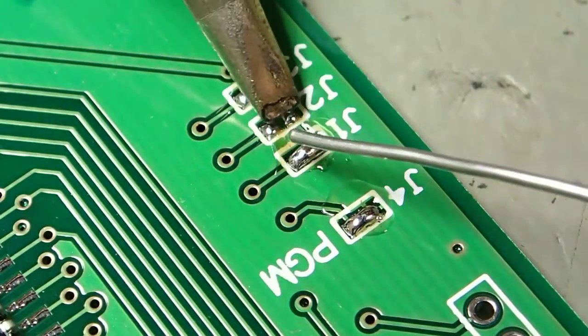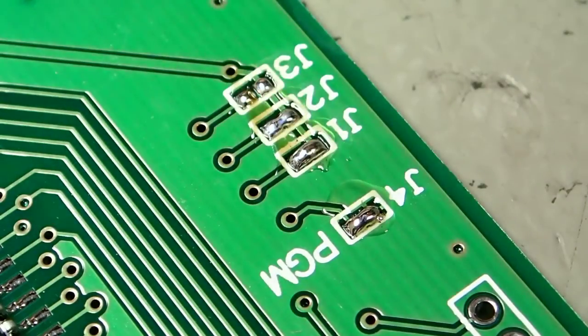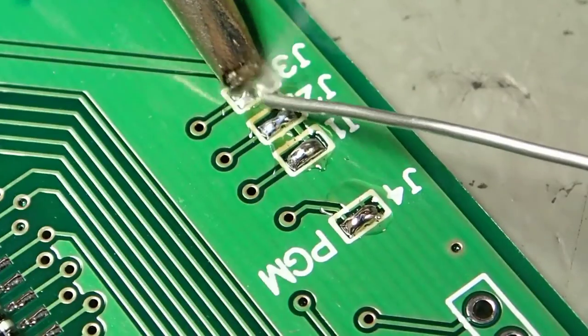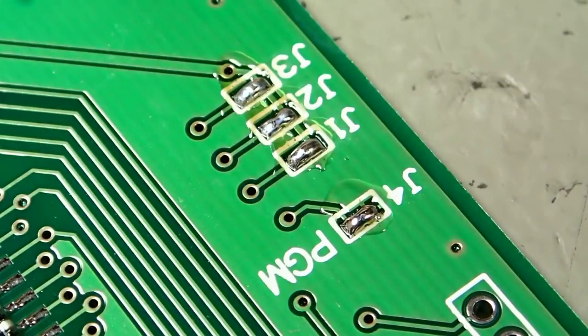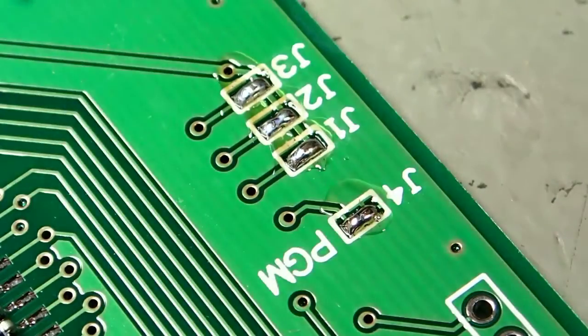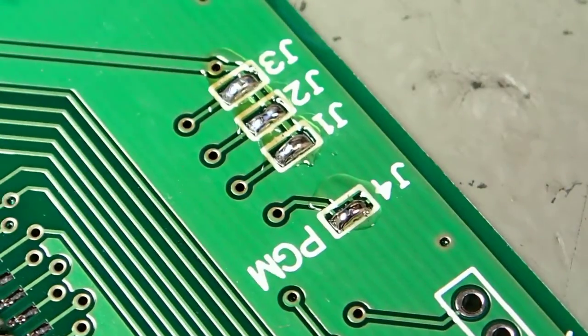You can see when I'm fitting, I take the iron away straight up, not dragging it sideways. Try to go as fast as you can. You really should only have to stay on the board for a quarter of a second. If you put too much heat on, eventually the board will fail and the pads will actually fall off the board and it all gets horrible.